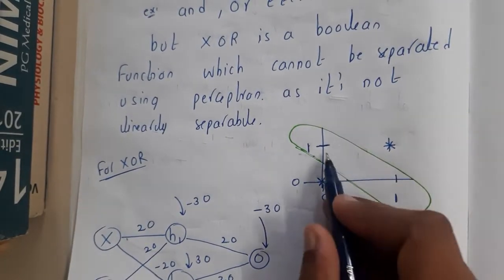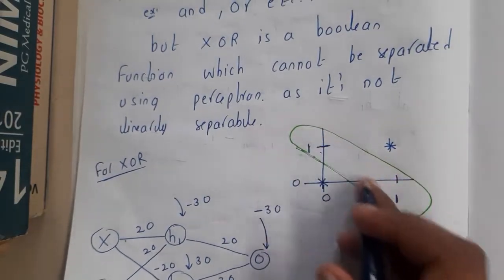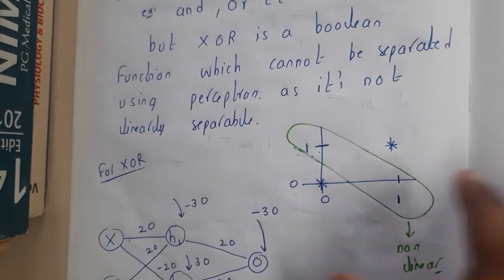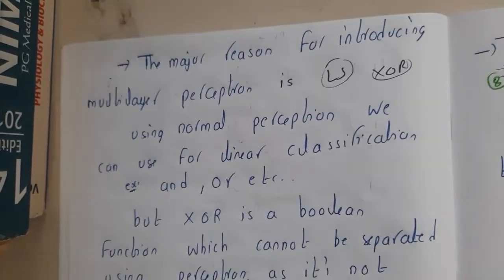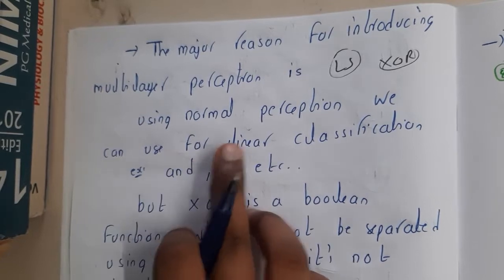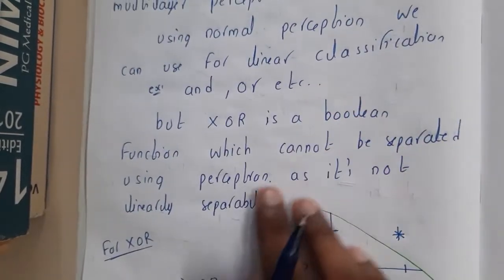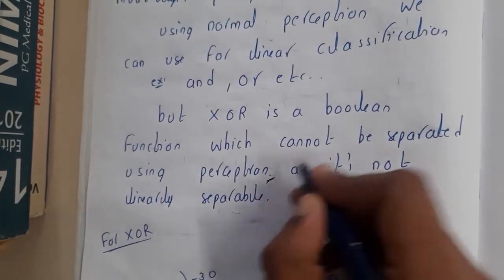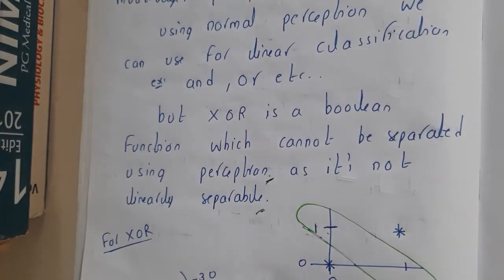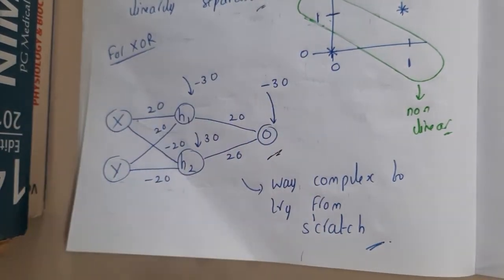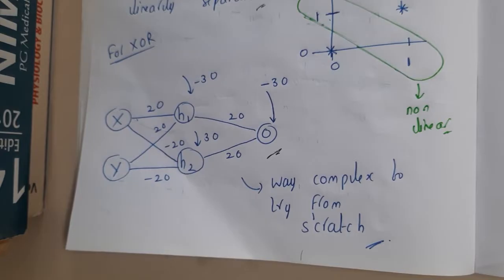At 0 and 0 its value is 0, at 1 and 0 and 0 and 1 it is 1, and at 1 and 1 it is 0. In this situation, we are left out with some odd shape which cannot be separated by a single line. In these situations, you cannot draw a perceptron, so for these kinds of things we need multi-layer neural network. Using a normal perceptron, we can use linear classifications like AND and OR, but XOR is a boolean function which cannot be separated using a perceptron as it cannot be linearly separable.